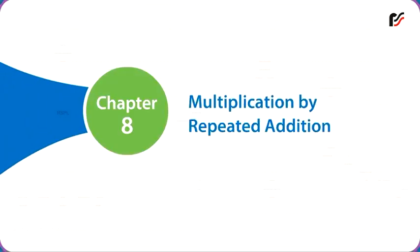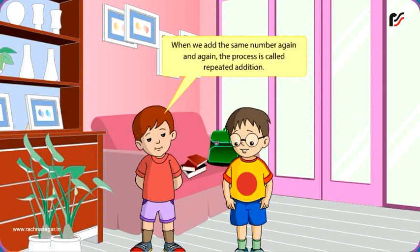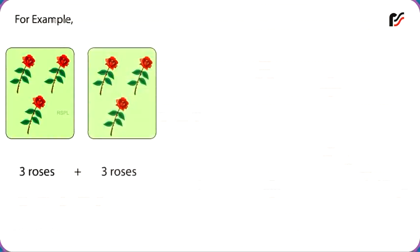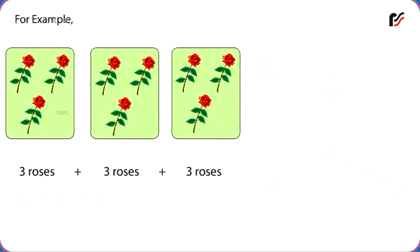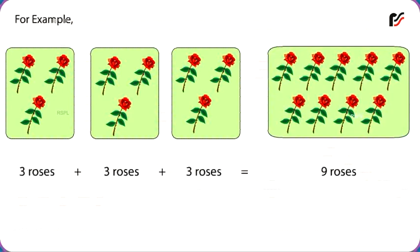Chapter 8: Multiplication by Repeated Addition. When we add the same number again and again, the process is called repeated addition. For example, 3 roses plus 3 roses plus 3 roses is equal to 9 roses. Here, we are adding the number 3 three times, so 3 times 3 is equal to 9.